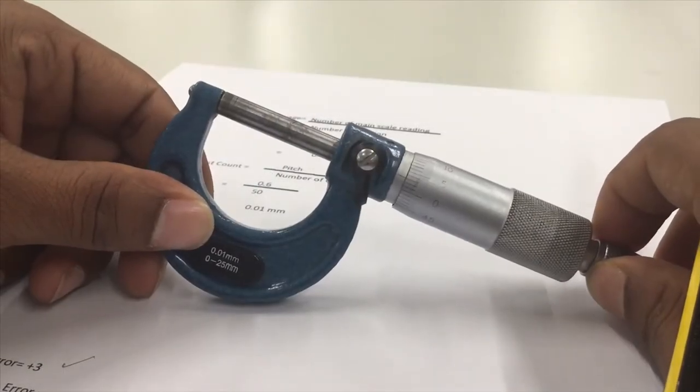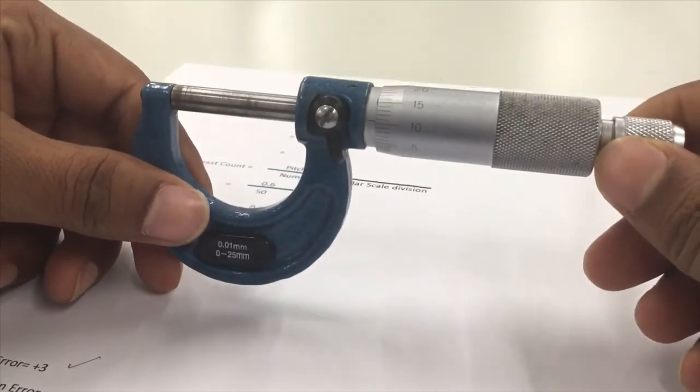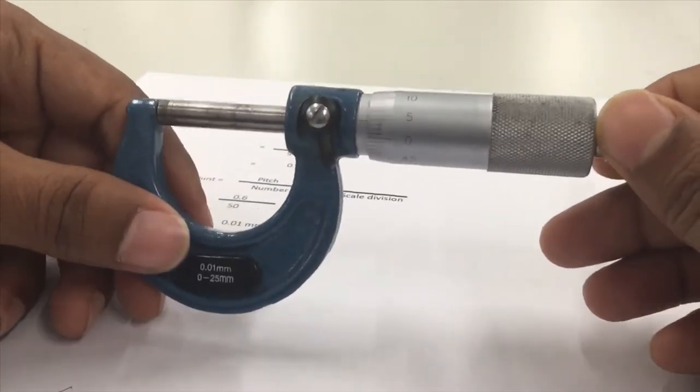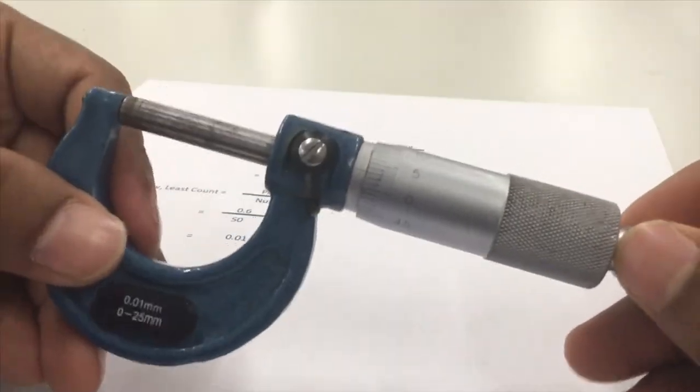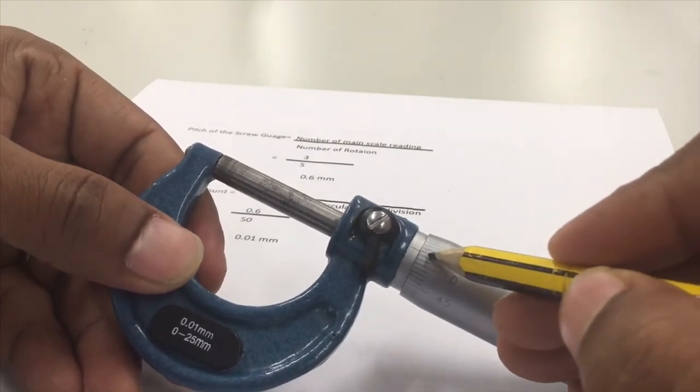Okay, let's find the least count of the screw gauge provided to us. To find the least count, I will require the pitch of the screw gauge. So here, I will show you how to find the pitch. So let's start the reading. As it has an error, it is starting with the third division on the circular scale. Now I will rotate it five times.